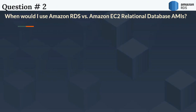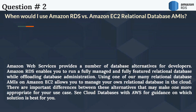The next question is: When would I use Amazon RDS versus Amazon EC2 Relational Database AMIs? Amazon Web Services provides a number of database alternatives for developers. Amazon RDS enables you to run a fully managed and fully featured relational database while offloading database administration. Using relational database AMIs on Amazon EC2 allows you to manage your own relational database in the cloud. See the cloud databases with AWS guidance to determine which solution is best for you.